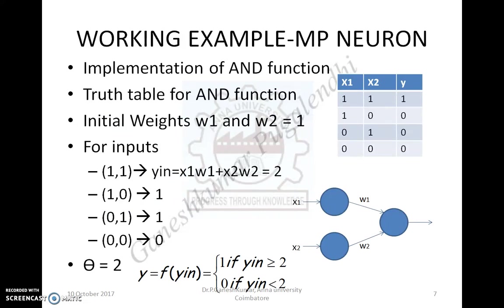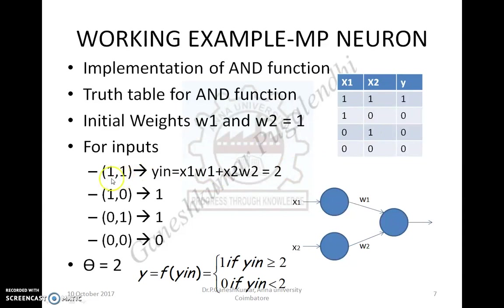The MP neuron can be easily used to realize logical gate functions. This slide shows how an AND function is implemented using an MP neuron. First, you need to know the truth table of the AND gate. You assume initial weights w1 and w2 as 1, because the architecture has a set of inputs. For every combination of inputs — for example 1,1 — you calculate the output. If you input 1,1 to the neural network and apply the formula, the net input is 2.